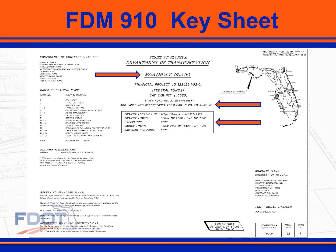Third, replace the key sheet map with the project location URL. The URL accesses GIS mapped locations developed to support the work program. Section 910.2.2 provides instruction on creating the URL. Work limits is information that would have been called out on the county map with leader lines.